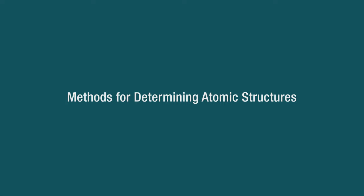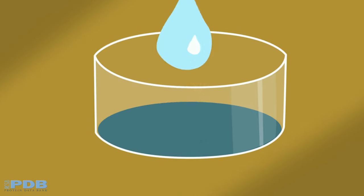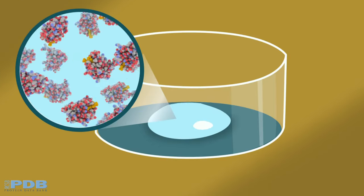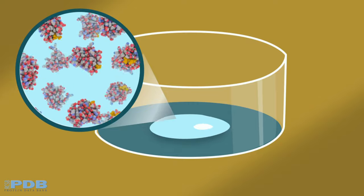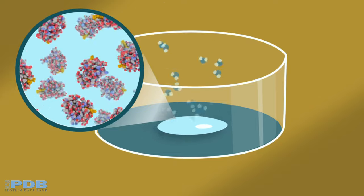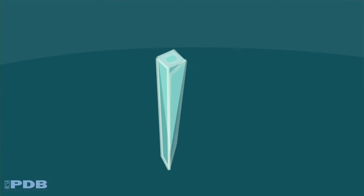Methods for Determining Atomic Structures: X-ray Crystallography. Proteins form crystals when they are purified and concentrated. Within the crystal, many copies of the protein are arranged in symmetrical arrays.